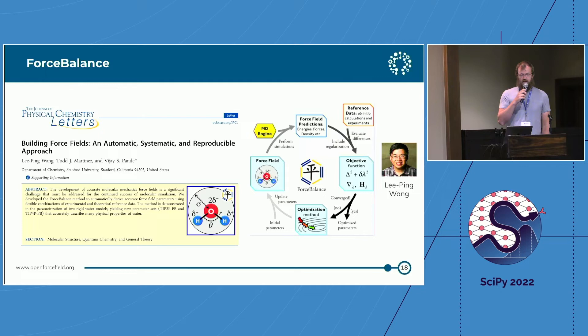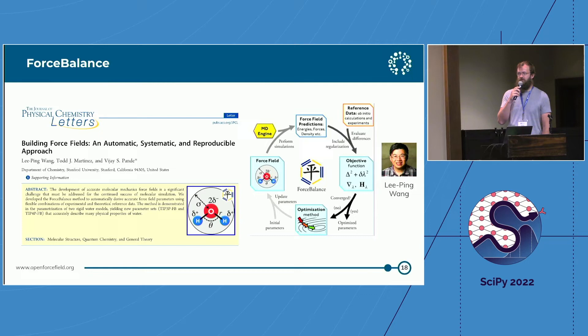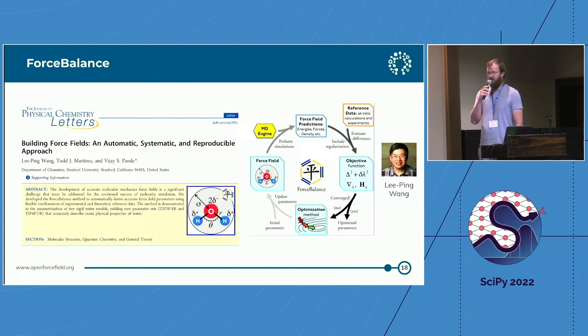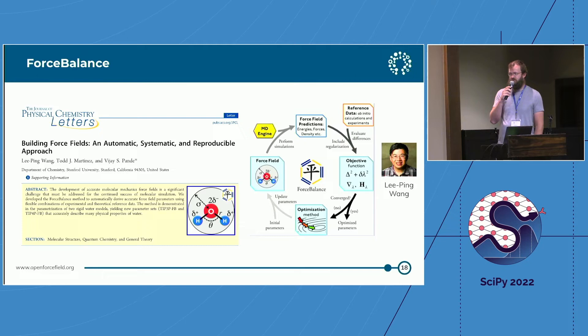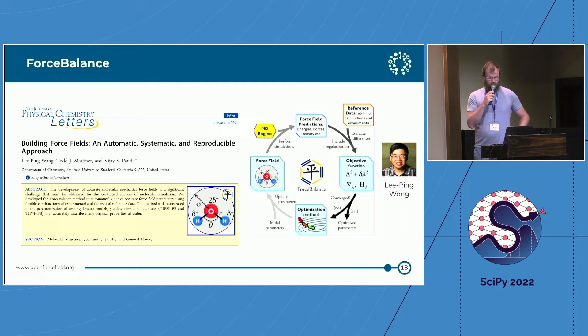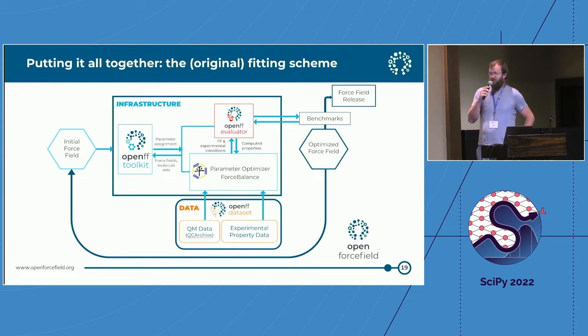Another really integral tool is how you actually do the fitting. There are more optimization libraries out there than any of us could count, but in this case we wanted to use something that already had some of the domain-specific knowledge we're after. ForceBalance has been the workhorse for OpenFF for several years now. It's a gradient-based optimizer from Li-Ping Wang, when he was in Vijay's lab. Before OpenFF, it was used to retune the TIP 3, 4, and 5P water models, and it had some great results for that.